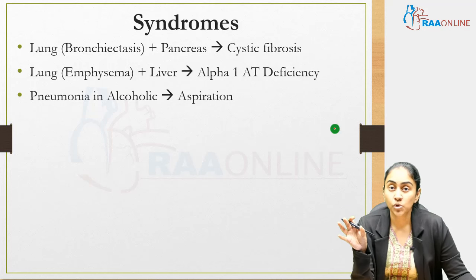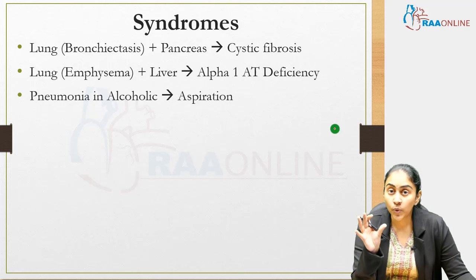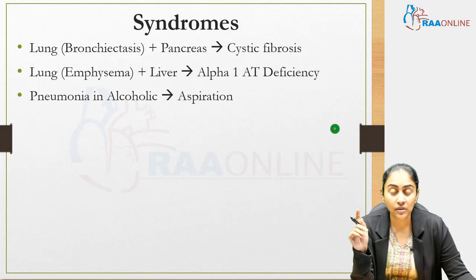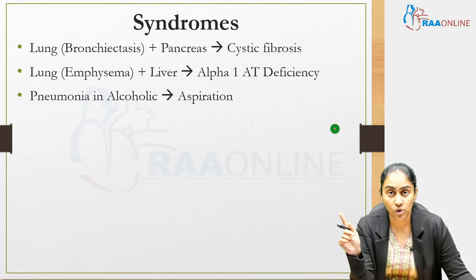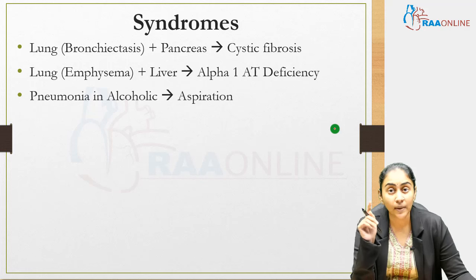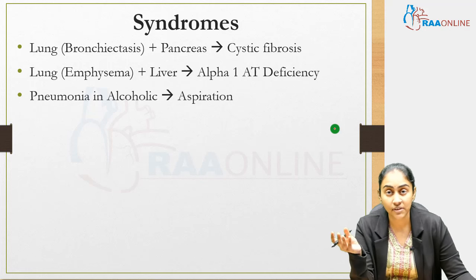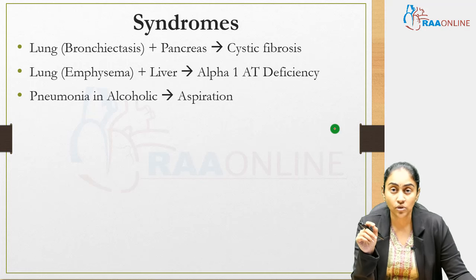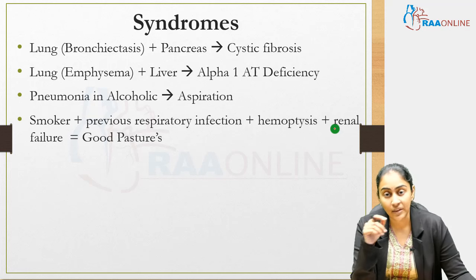When a pneumonia is described in an alcoholic patient, it is usually an aspiration pneumonia. If the case describes a community-acquired pneumonia in an alcoholic — particularly with mention of a cavity — the common etiological agent is Klebsiella.